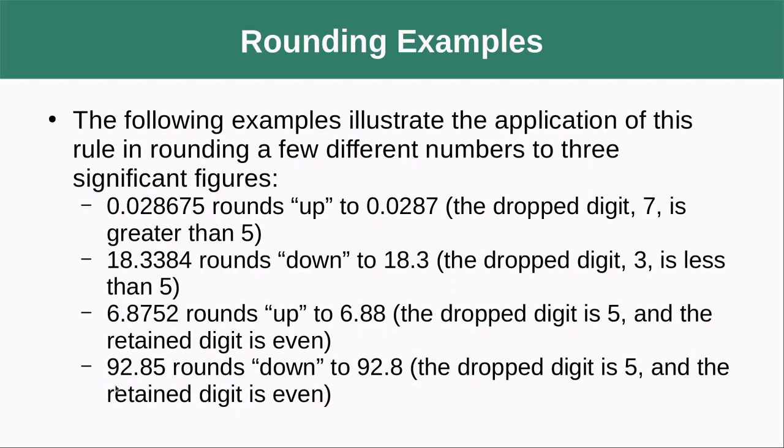Here we got 92.85. If I round that up, it'd be 92.9, which would be odd. So I'm going to round that down to give 92.8.